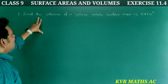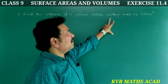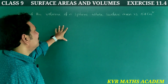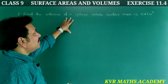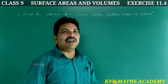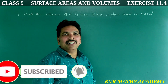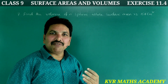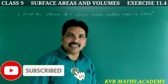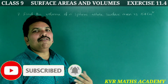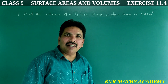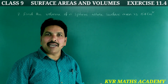7th question: Find the volume of a sphere whose surface area is 154 cm². Given that the surface area is 154 cm² and it is a sphere, we need to find the volume. The volume of a sphere is 4/3 π r³.